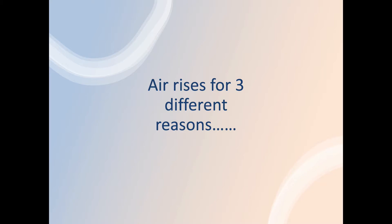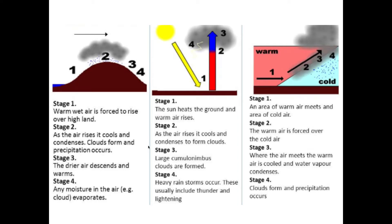Stage one: air rises for three reasons. You should find a version of these diagrams in your module booklet, but I'm going to talk you through them. This is important — it comes up in year one and year two. The first is called relief, or orographic. We've got a hill or a mountain: as the wind blows, it has no choice but to go up and over it. As it rises, it's going to cool down.